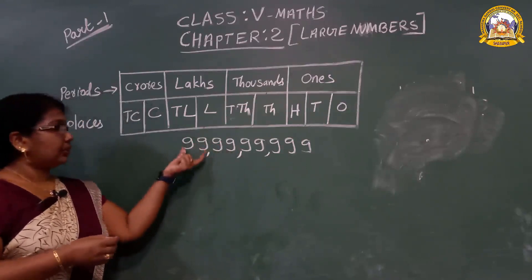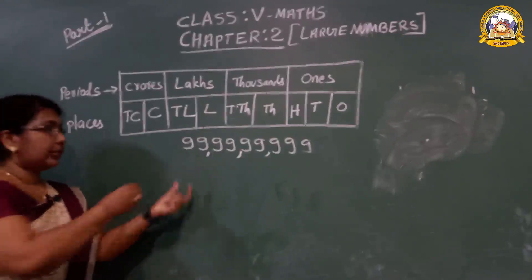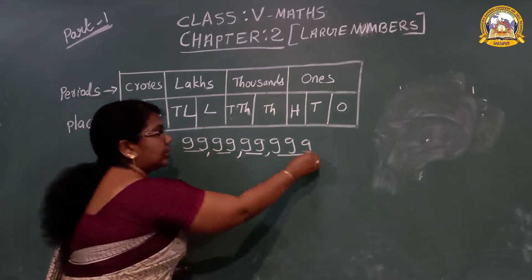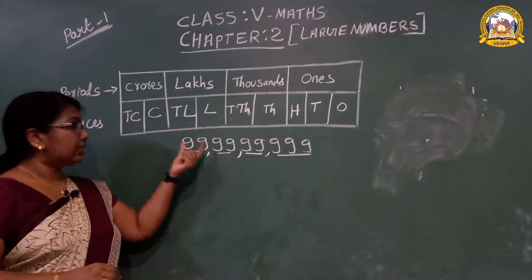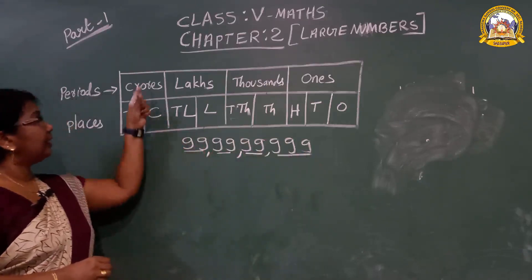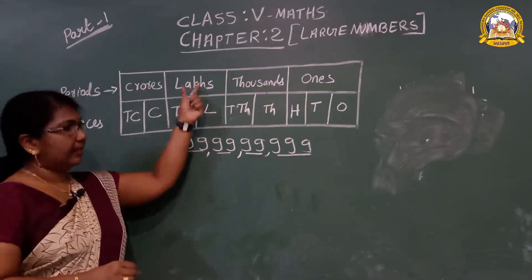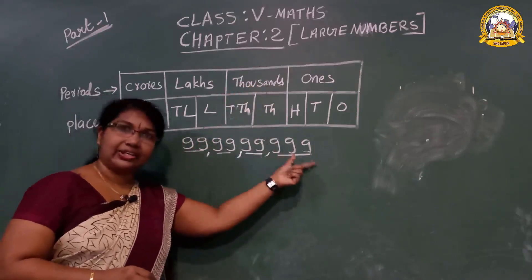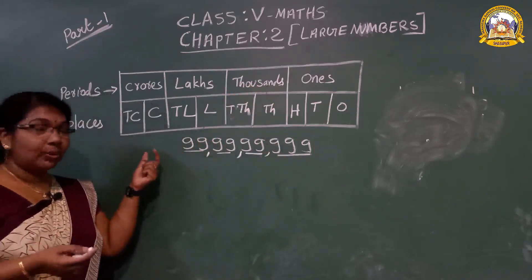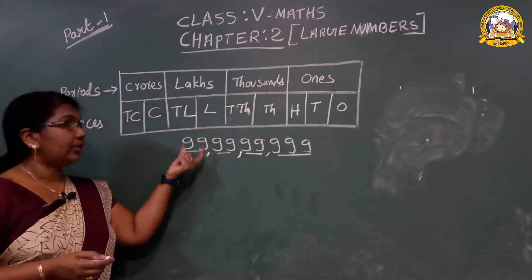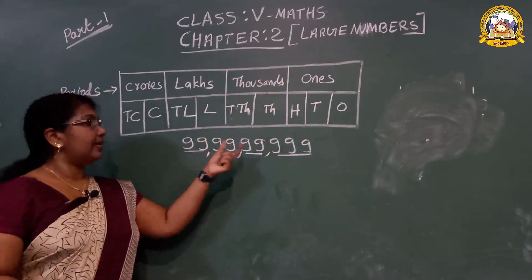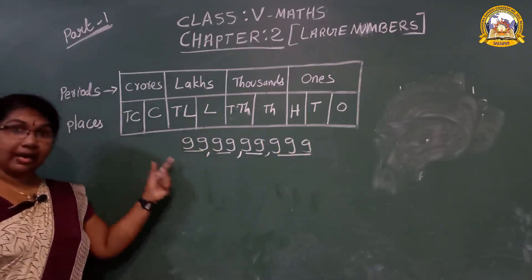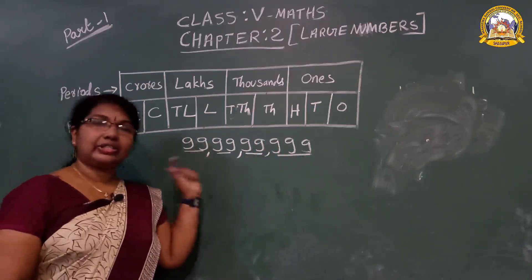How to read it? Each period you read together. There are 4 periods. This period is 99 crore, 99 lakh, 99,999. Read once more: 99 crore, 99 lakh, 99,999. This is the largest 9-digit number.